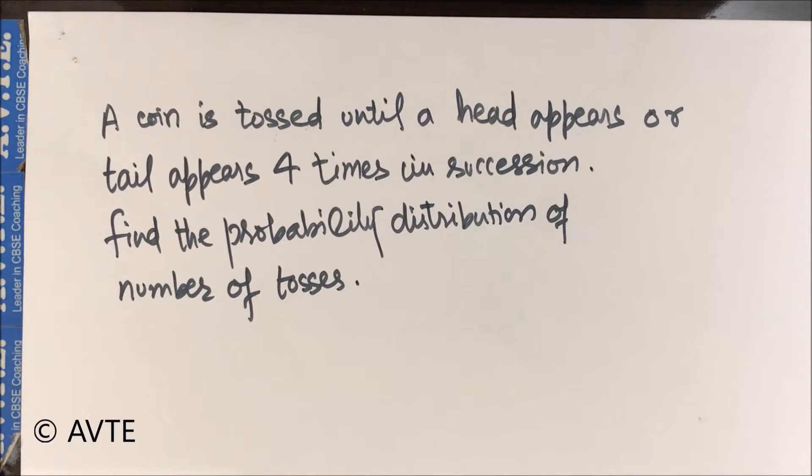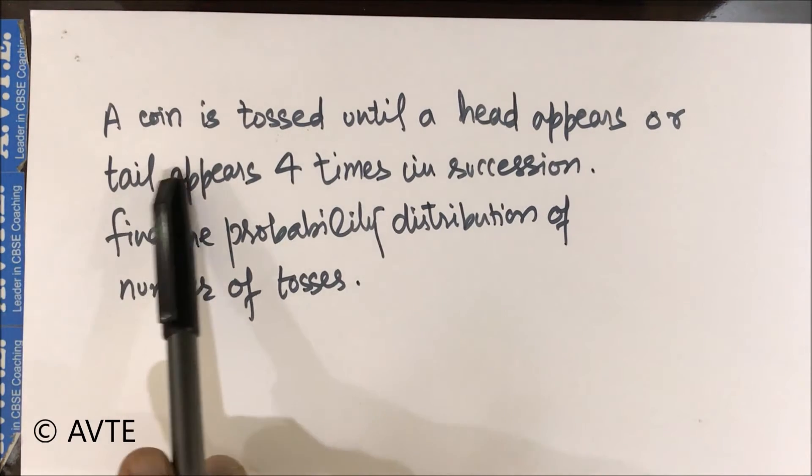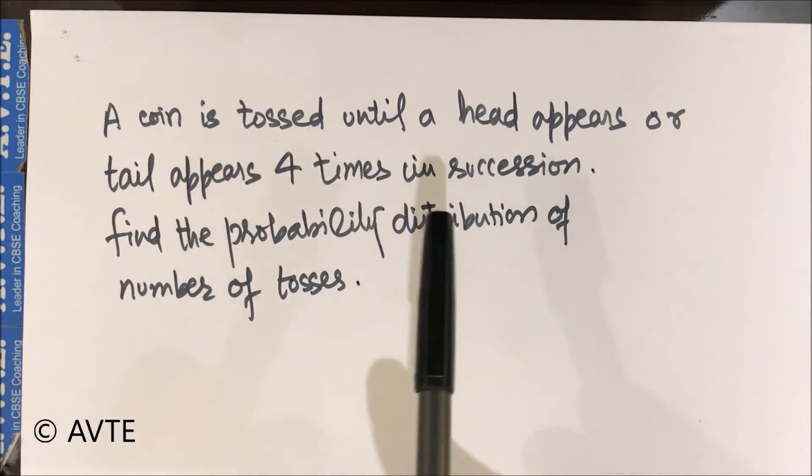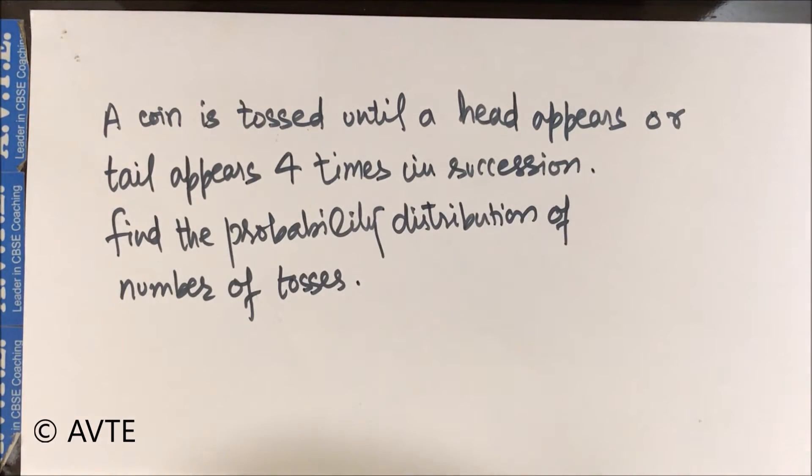Dear students, this is a good question on probability. Kindly read it. A coin is tossed until a head appears or tail appears four times in succession. Find the probability distribution of number of tosses.